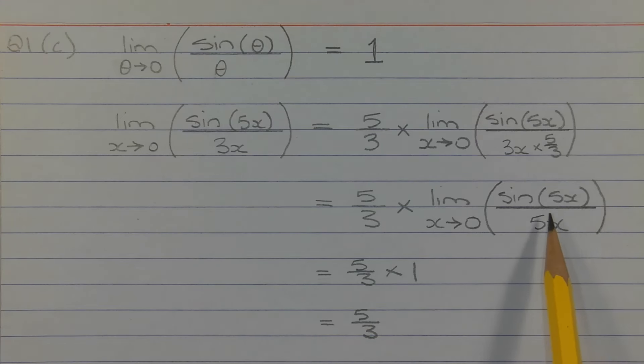Now the angle and the denominator match. So this limit here is equal to 1. So that equals 5 over 3 times 1, which equals 5 over 3.